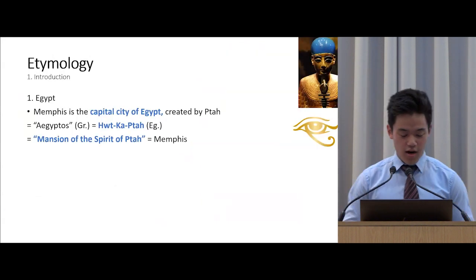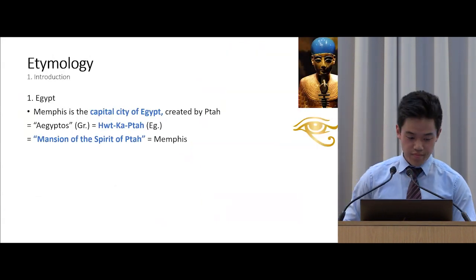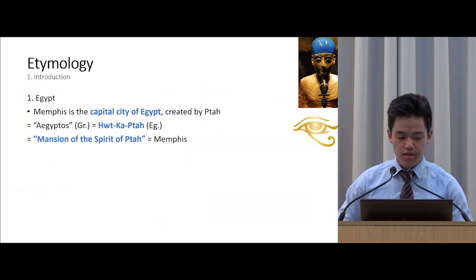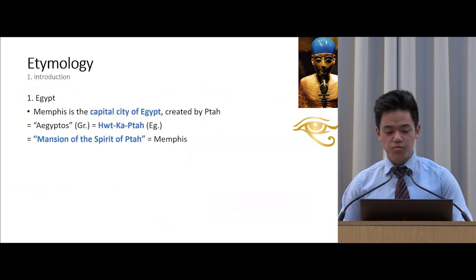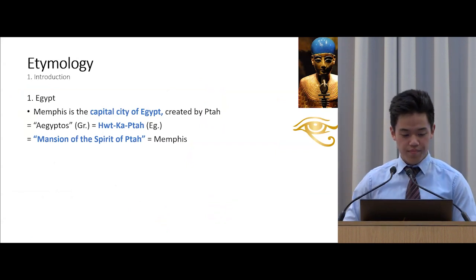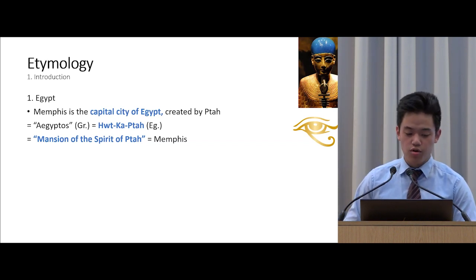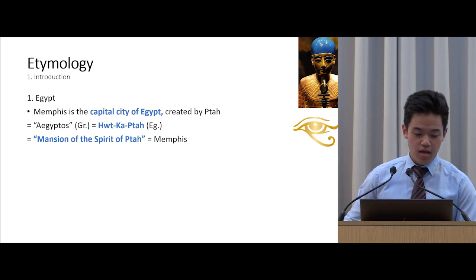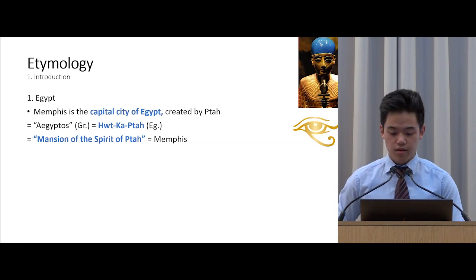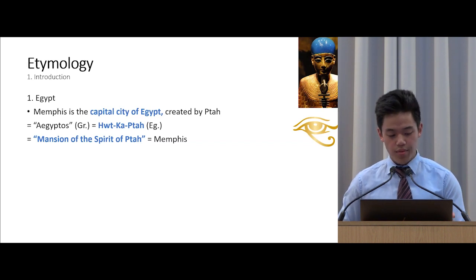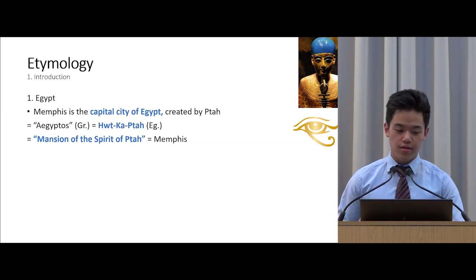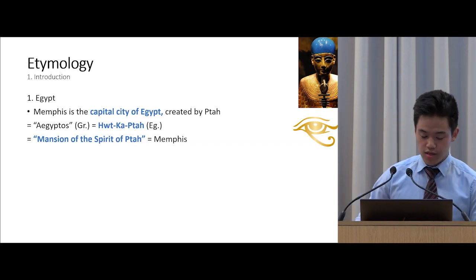To come to the real stuff — what is the etymology? What does Egypt mean? Egypt actually comes from the city of Memphis, because Memphis was the capital city of Egypt, and the Egyptians believed that Memphis was created by Ptah. We see the connection between Egypt and Memphis when looking at the name 'Egyptos,' which is Greek. When we translate it into ancient Egyptian, it means 'hyvd ka ptah,' which means 'mansion of the spirit of Ptah' — essentially the house of Ptah — and this was Memphis, the first city that the god Ptah created when he created the whole world.